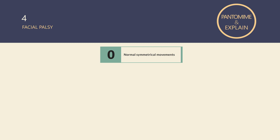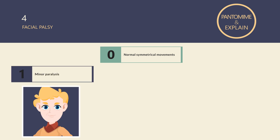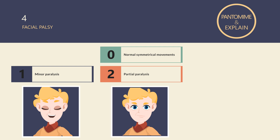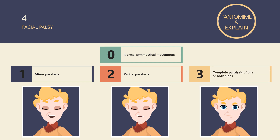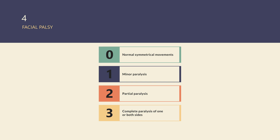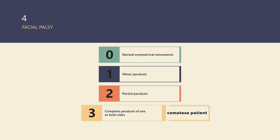Score 0 for normal symmetrical movements. Score 1 for minor paralysis such as a flattened nasolabial fold and mild asymmetry on smiling. Score 2 for partial paralysis with total or near-total paralysis of the lower face. Score 3 for a unilateral or bilateral absence of facial movement in both the upper and lower face, seen rarely for example in certain brainstem strokes. For comatose patients, score a 3.